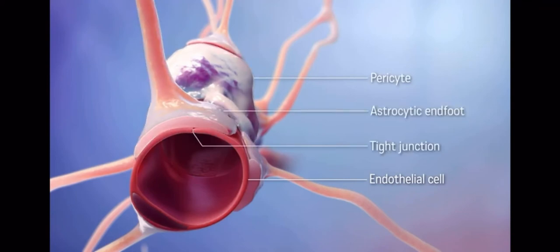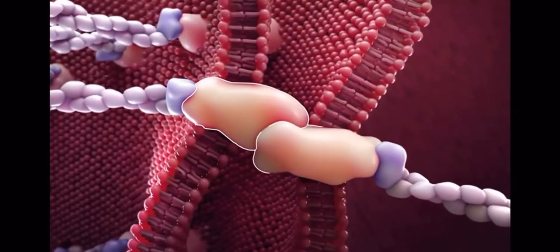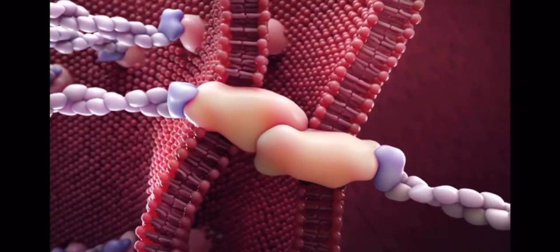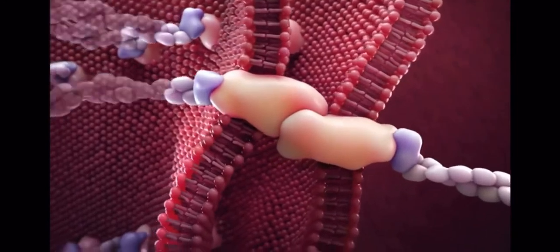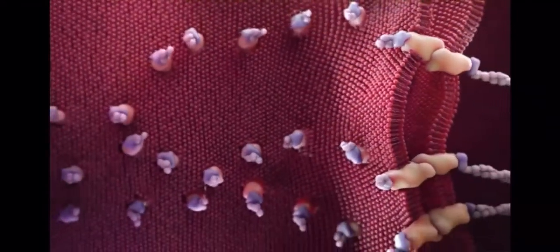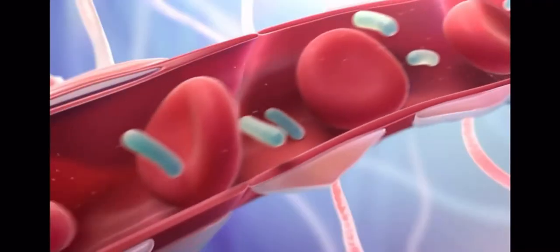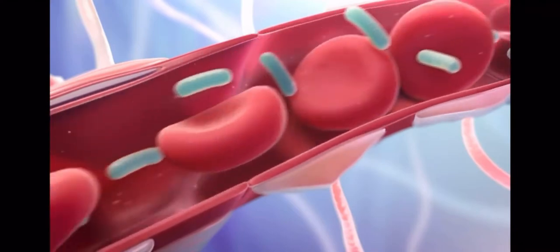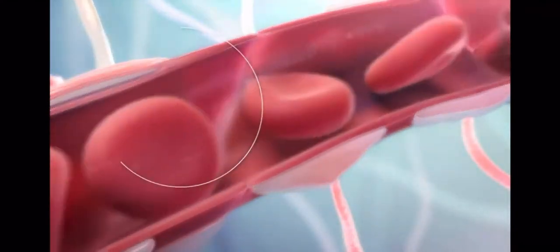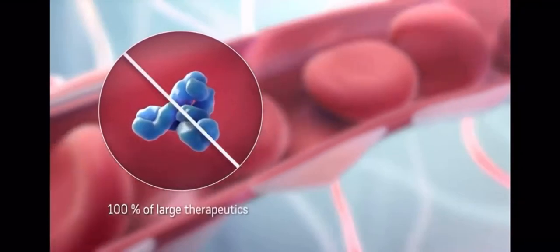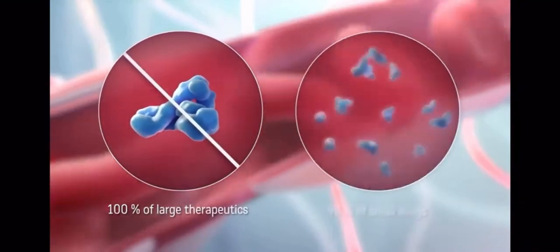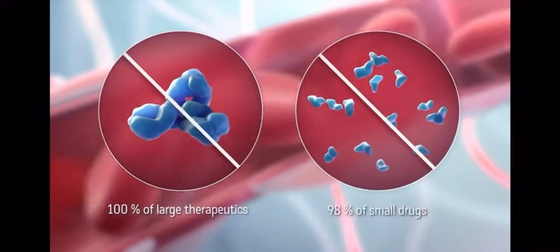Tight junctions tether endothelial cells together, contributing to the restrictive properties of the blood-brain barrier. Transmembrane proteins bind adjacent cells together and are arranged on the surface of endothelial cells. The blood-brain barrier limits the permeability of molecules to protect the brain from harmful agents, but this results in 100% of large therapeutics and 98% of smaller drugs to not enter the brain.